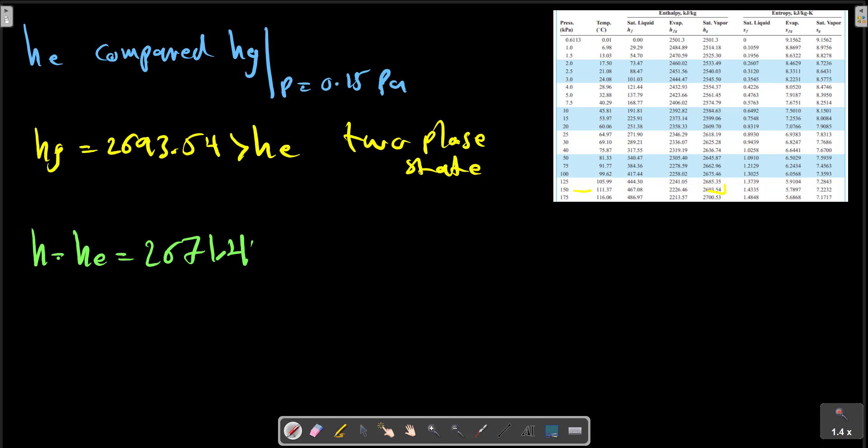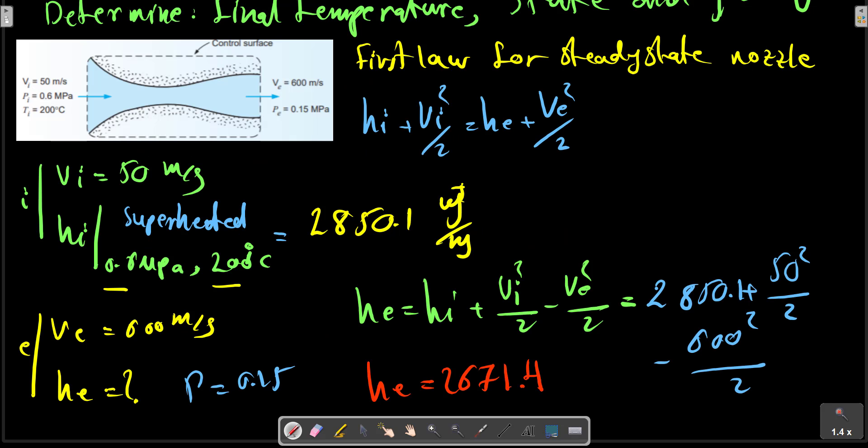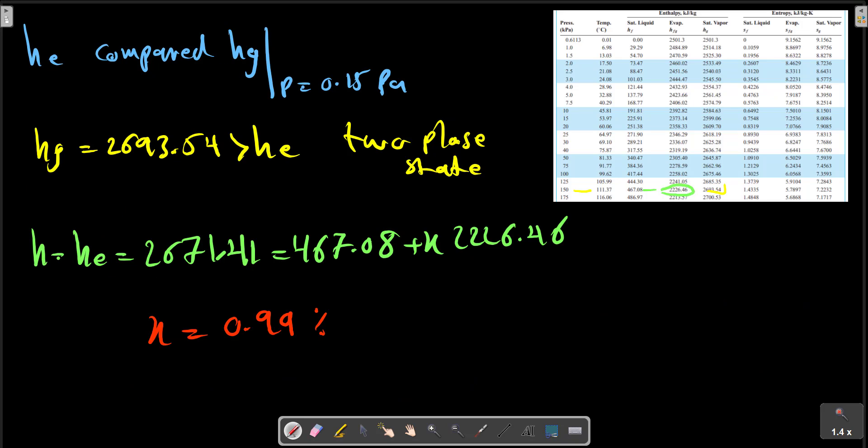So we can now calculate the quality. h_e from previous calculation equals h_f plus x times h_fg. But we can calculate x.